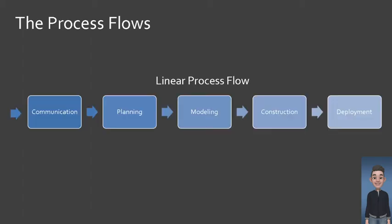One of the process flows is the linear process flow. In this process flow, each activity is executed in a linear or sequential manner, one after another. This means that before any actions can take place in the modeling activity, all the planning tasks and work products must be accomplished or completed first.